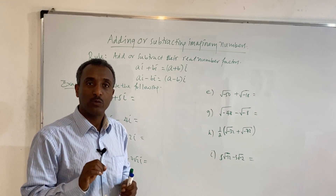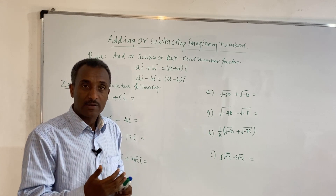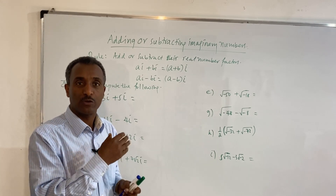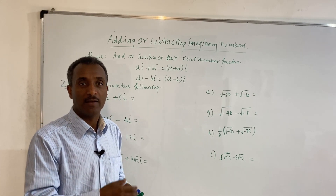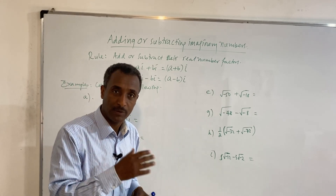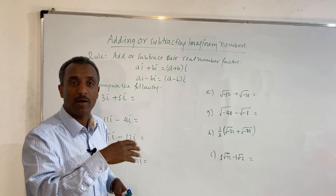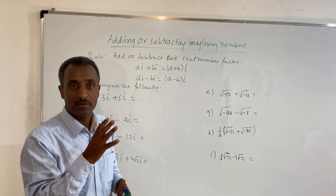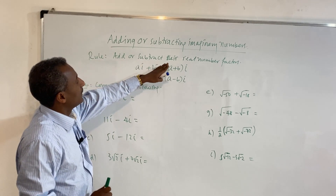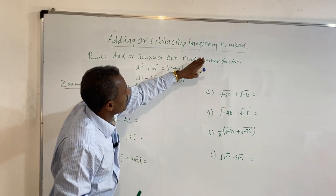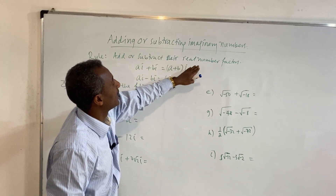i squared is equal to negative 1. We are now adding imaginary numbers. An imaginary number is a multiple of i. When adding or subtracting imaginary numbers, we add or subtract their real number factor.